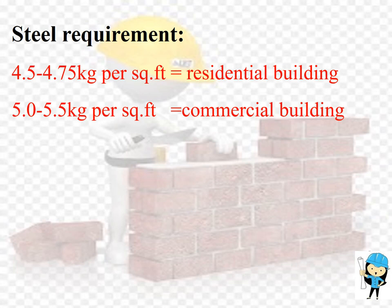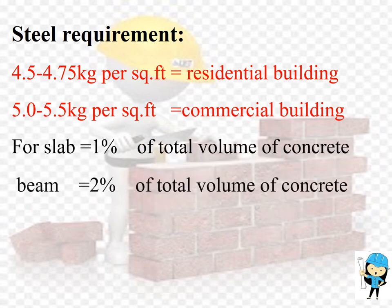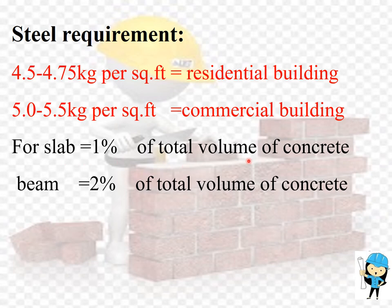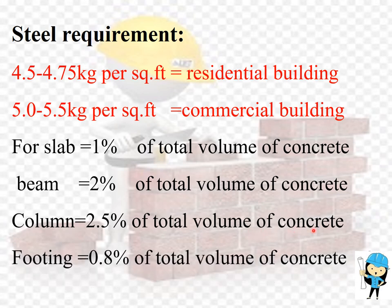The BM Dutta recommendation states that the amount of steel required for slab is 1% of the total volume of concrete; for beam, 2% of the total volume of concrete; for column, 2.5% of the total volume of concrete; and for footing, 0.8% of the total volume of concrete. These four data points suggested by BM Dutta represent an accurate method to find the amount of steel required.